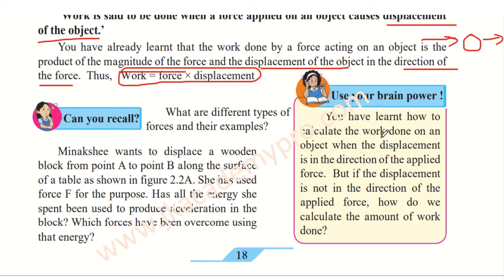You have learned how to calculate the work done on an object when the displacement is in the direction of the applied force. But if the displacement is not in the direction of the applied force, how do we calculate the amount of work done? In the previous example, whenever you push the ball, the displacement occurs in the same direction. But what if the displacement is in the opposite direction of the force? In that case, we have to put a negative sign, so work is equal to force into negative displacement.